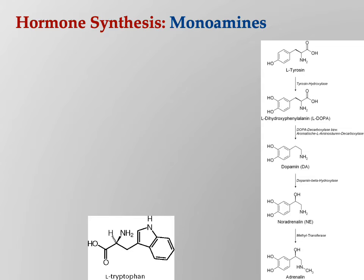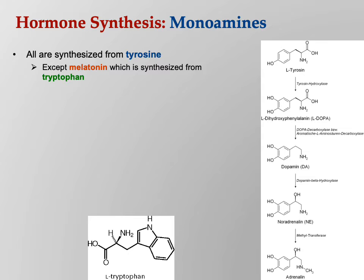The monoamines — we saw this in Bio 201. The monoamines are amino acid-like substances. The main ones, which we're going to see again, are the catecholamines. All are synthesized from tyrosine, except melatonin, which is synthesized from tryptophan. Dopamine is a precursor to norepinephrine — dopamine is actually modified inside some neurons to become norepinephrine. Then norepinephrine in turn can become epinephrine. These are very closely related. Look at how similar the structure is: that six-sided ring with the two hydroxyl groups on it, and easy to convert between them.